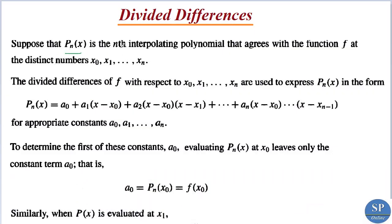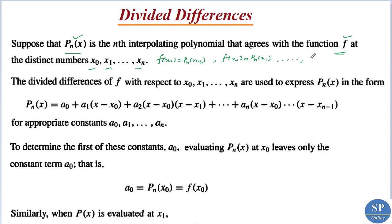Suppose that pn(x) is the nth interpolating polynomial that agrees with the function f at distinct points x0, x1, ..., xn. That means f(x0) = pn(x0), f(x1) = pn(x1), ..., f(xn) = pn(xn). So pn(x) is the nth interpolating polynomial of the function f.